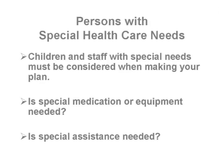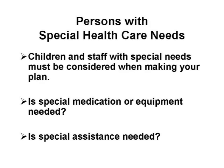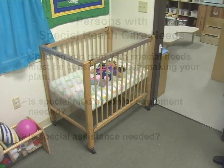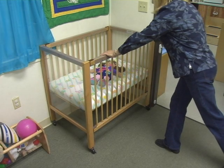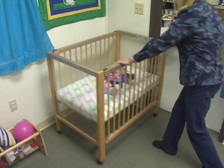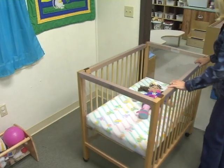Each of these actions needs to be practiced and evaluated regularly. Remember to include accommodations for those that have special needs. For example, children or staff that require medication, special equipment, or need assistance. If you care for infants, you will want to have an evacuation crib.